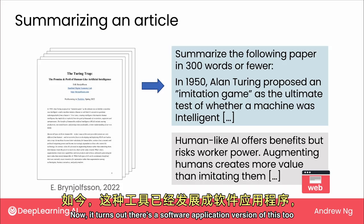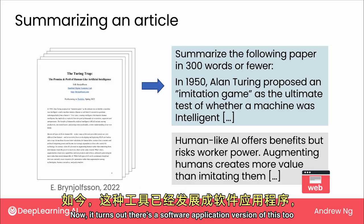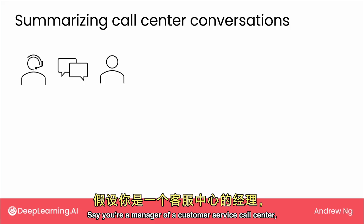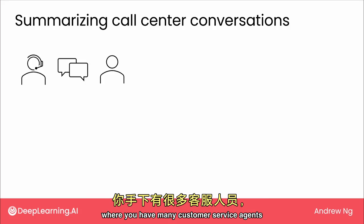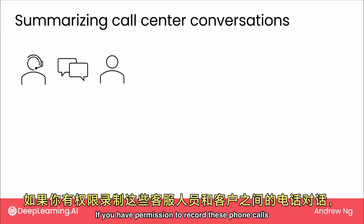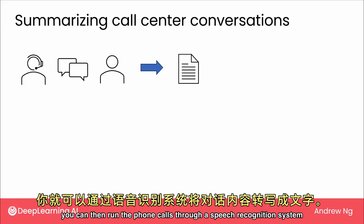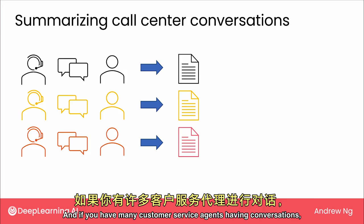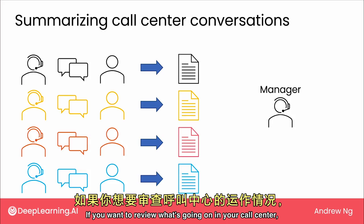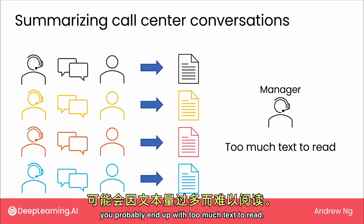There's also a software application version of this that is taking off in businesses. For example, say you're a manager of a customer service call center where you have many customer service agents having phone calls with customers. If you have permission to record these phone calls, you can run them through a speech recognition system to get a text transcript of the conversation. If you have many agents having conversations, you end up with a lot of text transcripts — probably too much text to read if you want to review what's going on in your call center.